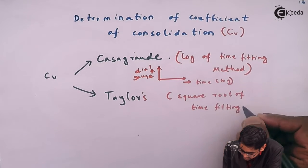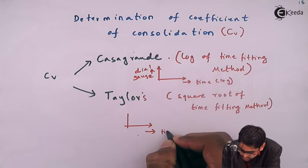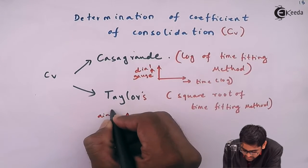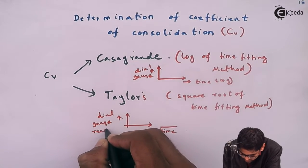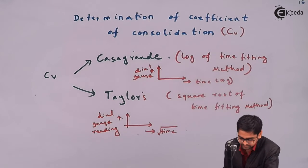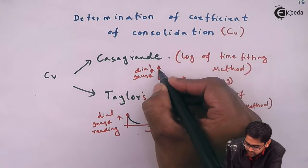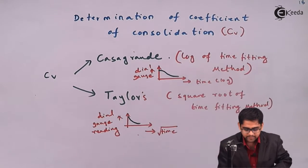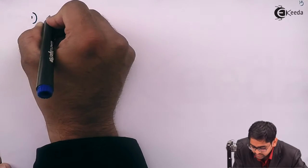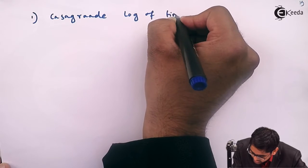Taylor's method is also called the square root of time fitting method. As the name suggests, the x-axis would be the square root of time, while the y-axis is the dial gauge reading — since that is the reading we obtain during the consolidation test. We will examine these graphical methods to determine the coefficient of consolidation, starting with the Casagrande log of time fitting method.